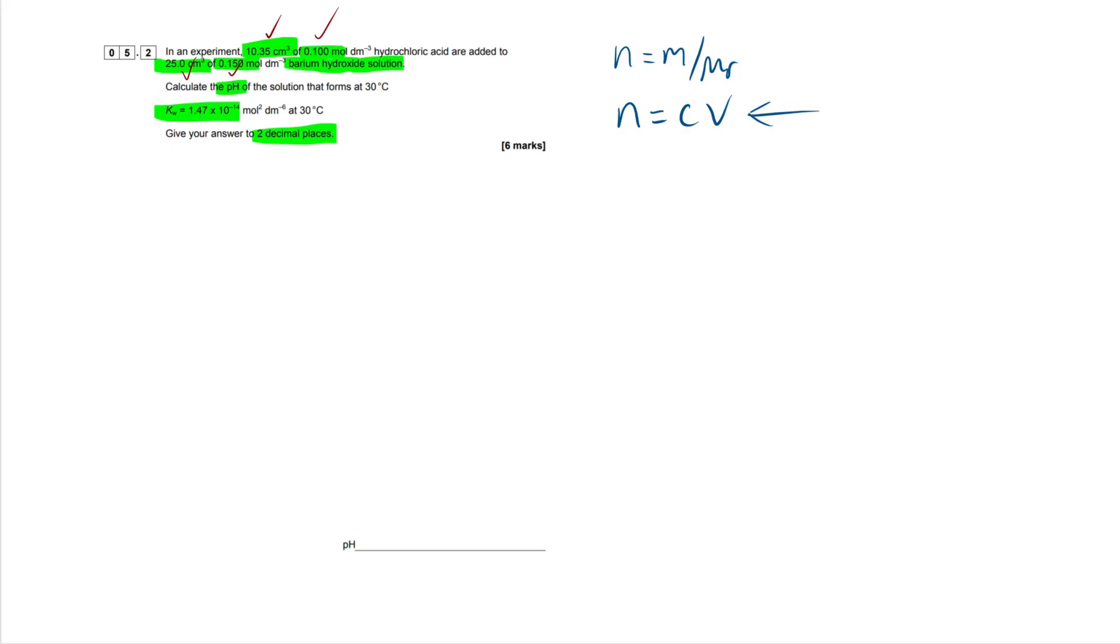So first off, let's do our moles of hydrochloric acid. This is going to be our concentration, 0.1, multiplied by our volume, 10.35. Now in chemistry, in the UK specifically, we always have our apparatus to centimeters cubed. But this isn't the case for these calculations because our concentration is in moles per decimeter cubed. And to convert from centimeters cubed into decimeters cubed, all we have to do is divide by 1,000, which is exactly the same as times 10 to minus 3.